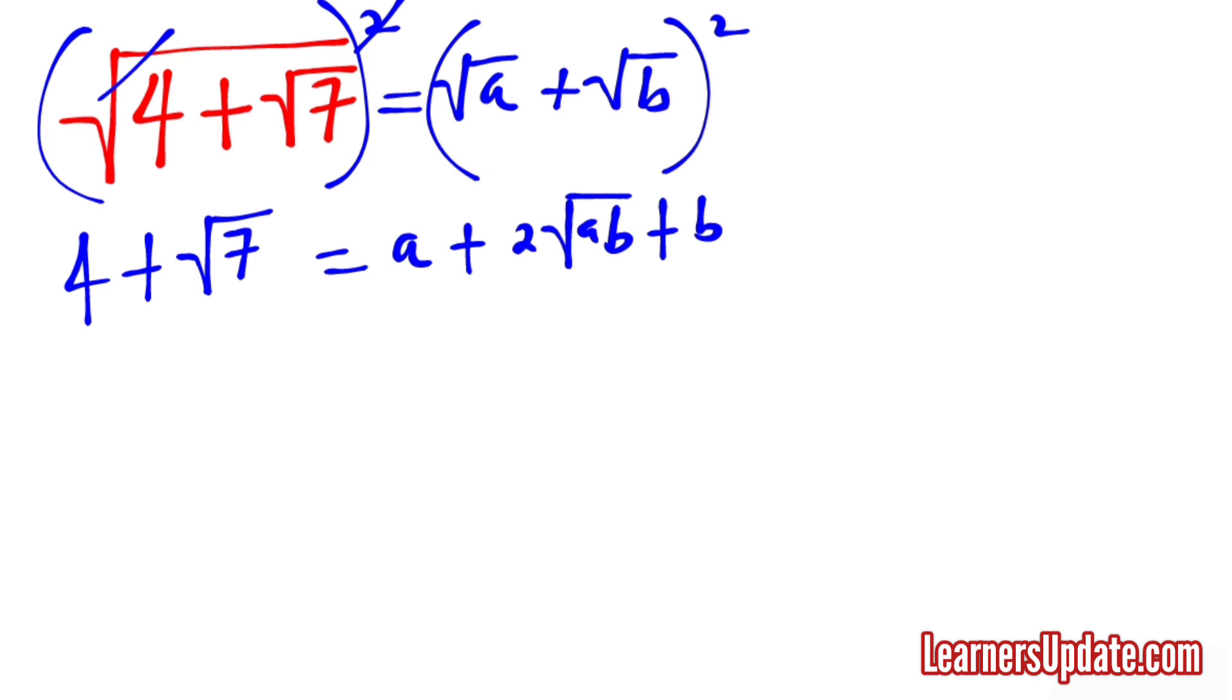Now by comparing the two sides, you can see clearly that A plus B is 4 and 2 root AB is root 7.